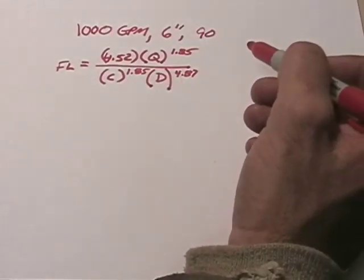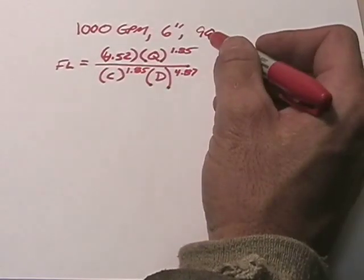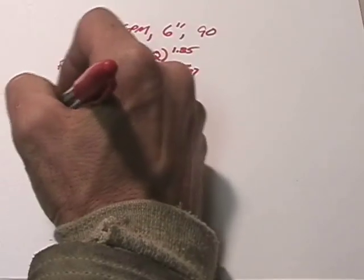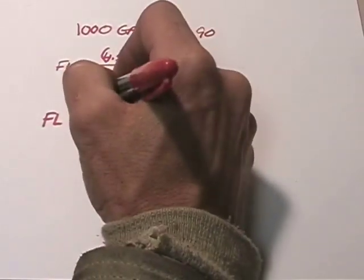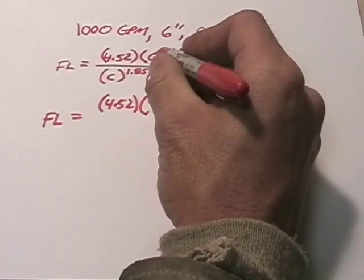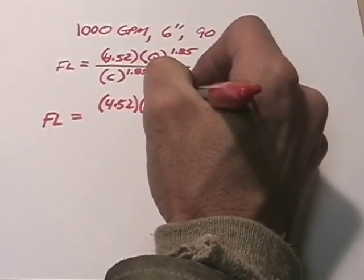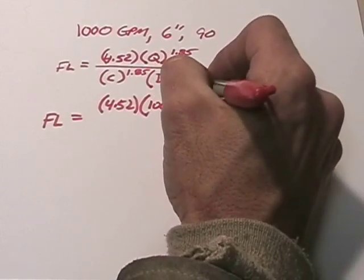If we calculate this out for this problem, our friction loss in psi per foot is going to equal—we're just going to plug in our numbers. 4.52 times the flow, which is 1,000 gallons per minute, and we raise that to 1.85.